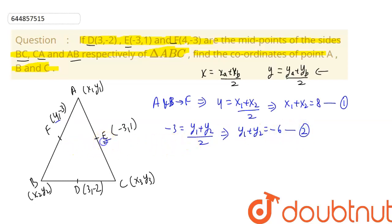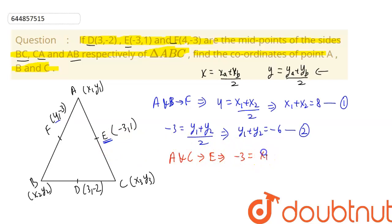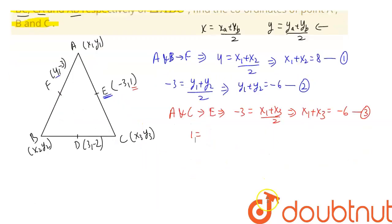Point E is the midpoint of A and C. Taking the x-coordinate: -3 = (x1 + x3) / 2, giving us x1 + x3 = -6. This is equation 3. Similarly, the y-coordinate: 1 = (y1 + y3) / 2, so y1 + y3 = 2. This is equation 4.